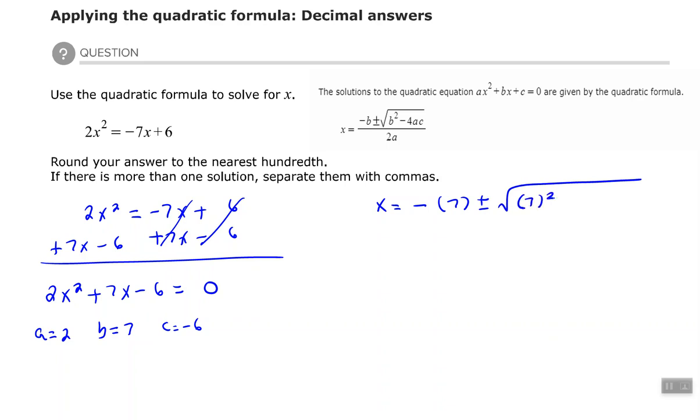...plus or minus the square root of b² minus 4 times a times c, which is -6, all over 2 times a.